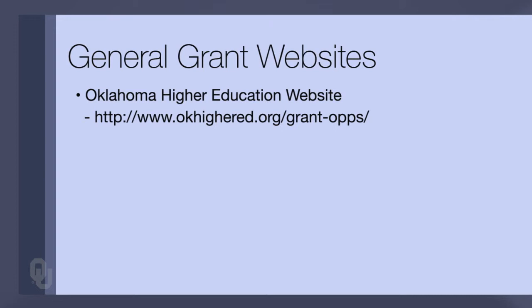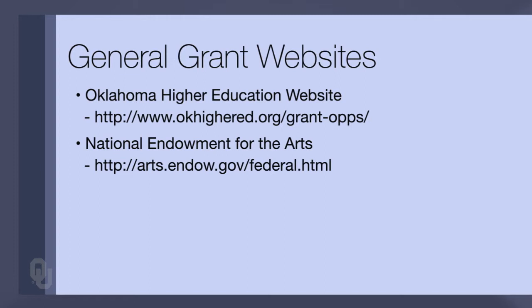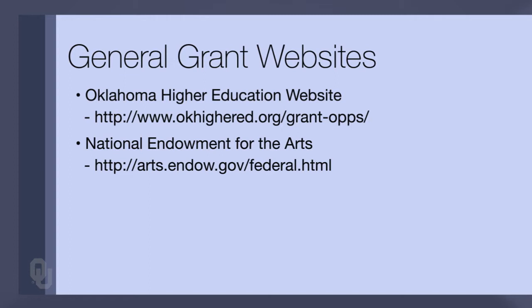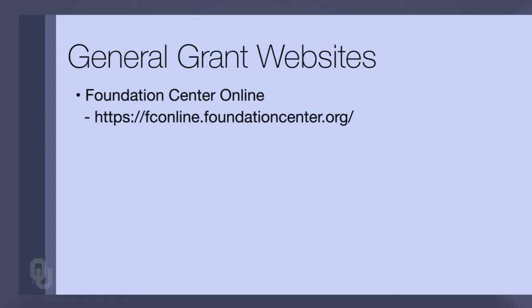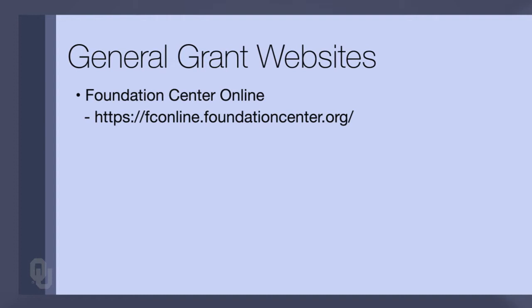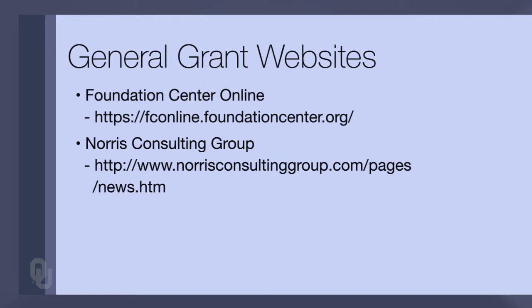General grant websites are also very good for searching. The Oklahoma Higher Education website is a good one. The National Endowment for the Arts is very well developed and helps you understand grant proposals, proposal writing, and how to obtain grants for children dealing with the arts. Grants.gov has all federal grants and many tips on writing grant proposals, including a list of vocabulary terms. The Council on Foundations helps you understand foundation giving. The Foundation Center Online has many tips and tutorials on grant writing. The Norris Consulting Group lists grant resources available by month specifically for neighborhoods or schools with youth under age 18.